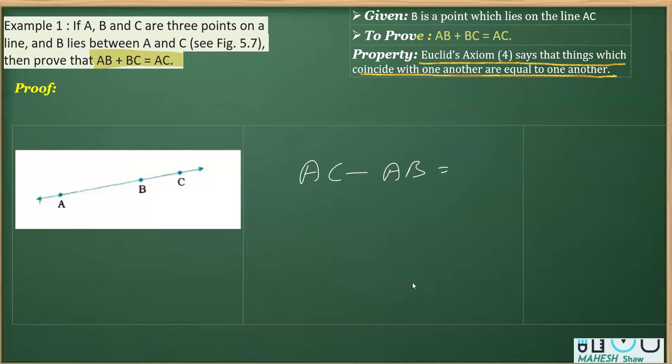If from AC you subtract AB, you are getting BC.